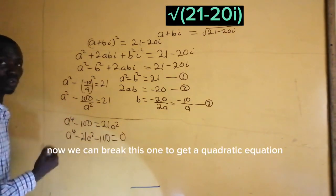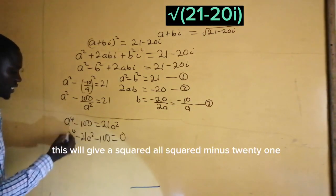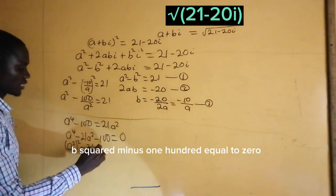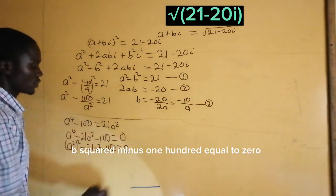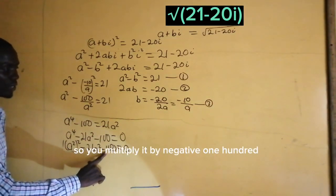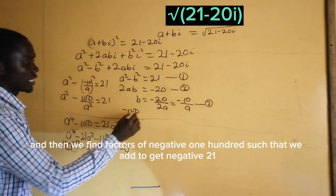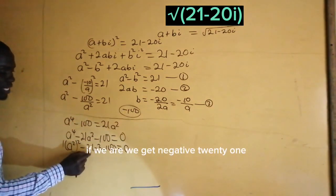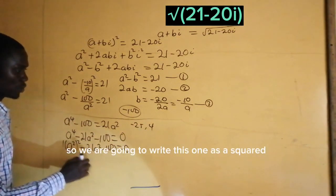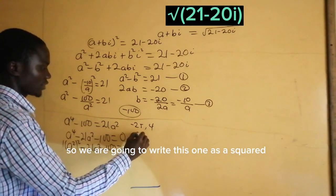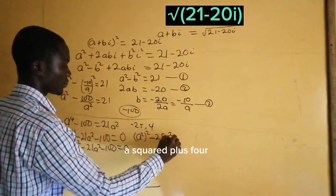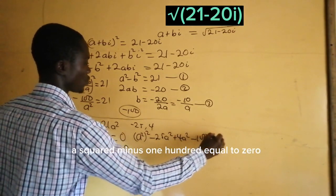Now we can factor this to get a quadratic equation in a squared: a to the power 4 minus 21a squared minus 100 equal to 0. The coefficient is positive 1. We multiply it by negative 100 to get negative 100, and find factors of negative 100 that sum to negative 21, which are negative 25 and 4. So we write this as a squared times a squared minus 25, plus 4 times a squared minus 25, equals 0.